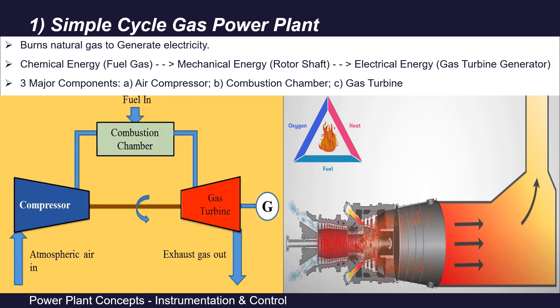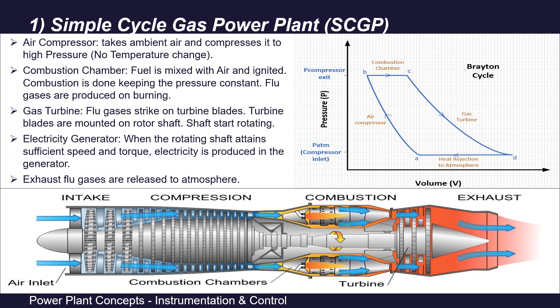We all know that for burning fire, we need fuel, air, and heat. Heat is in the form of some ignition spark, and as a result of burning of fuel, flue gases are produced. We have ample amount of air available in our environment. Air is taken through air intake into the air compressor, which is an axial type of air compressor.